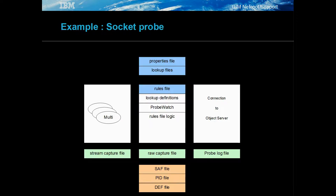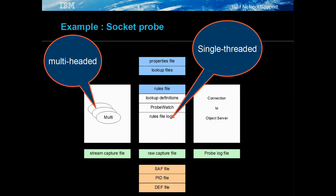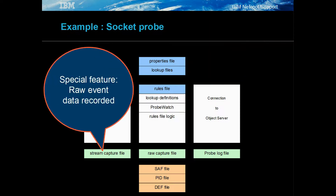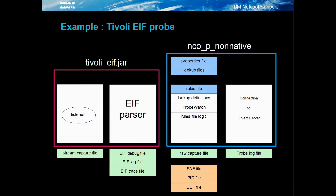The socket probe is a good example of a native probe. It is a multi-headed, single-threaded probe. Its features include the logging of the TCP/IP data into a raw stream capture file, which allows the socket probe to be used when replicating events or examining event processing.